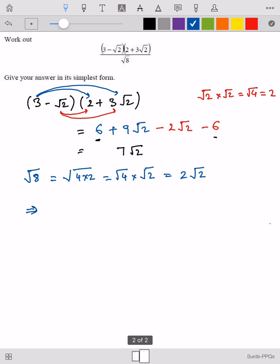So that implies my question now becomes 7 square root 2 divided by 2 square root 2. Square root 2 and square root 2 cancel each other. My final answer is 7 over 2.